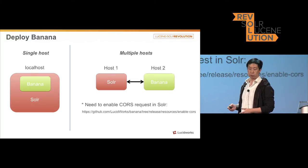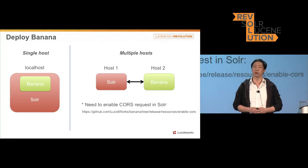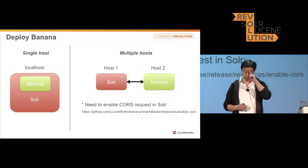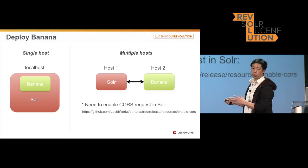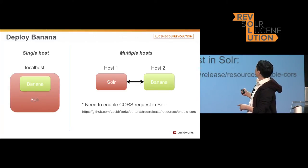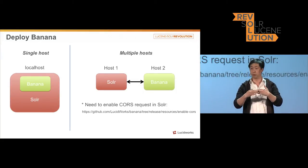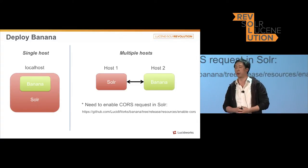But in real production, you probably want to go with the second deployment layout, which is installing Banana on multiple hosts. In this case, you're going to have either a Solr single node or a Solr Cloud. If you use Solr Cloud, you're going to have to configure Banana to point to your ZooKeeper, which is going to distribute or redirect your request to the right Solr Cloud node.